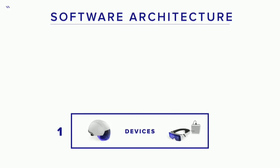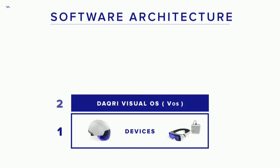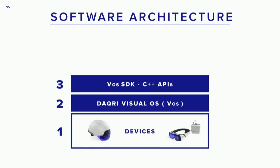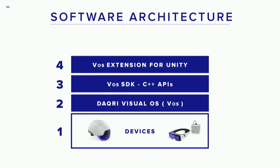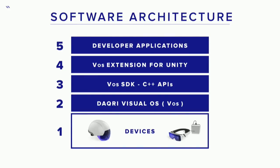At the very bottom we have all of our devices, with really strong processors — we use Intel M7 processors — all the different sensors you need to understand the environment, and wide angle field of view lenses that are see-through so you can render content. On top of that, we have the same OS across all of our devices that we call VOS, or the Visual Operating System. Our CEO Brian always describes it as an operating system for the world, not necessarily for your device. On top of that we have our APIs, which are exposed in a C++ layer. And then on top of that we have the layer we're going to play with today, which is our extension for Unity. And on top of that are the developer applications. The key takeaway is that no matter when or what you build for on the Daiquiri ecosystem, it's going to run on all of our devices. The APIs are the same, the interfaces are the same, and they should be binary compatible.